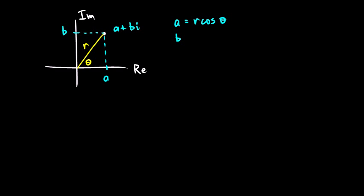And b, the vertical part, or the imaginary part, b, is r sine theta. So the complex number could be written as r cosine theta plus r sine theta times i. And we'll put the i out front. And you can factor out the r, and it would be r cosine theta plus i sine theta.